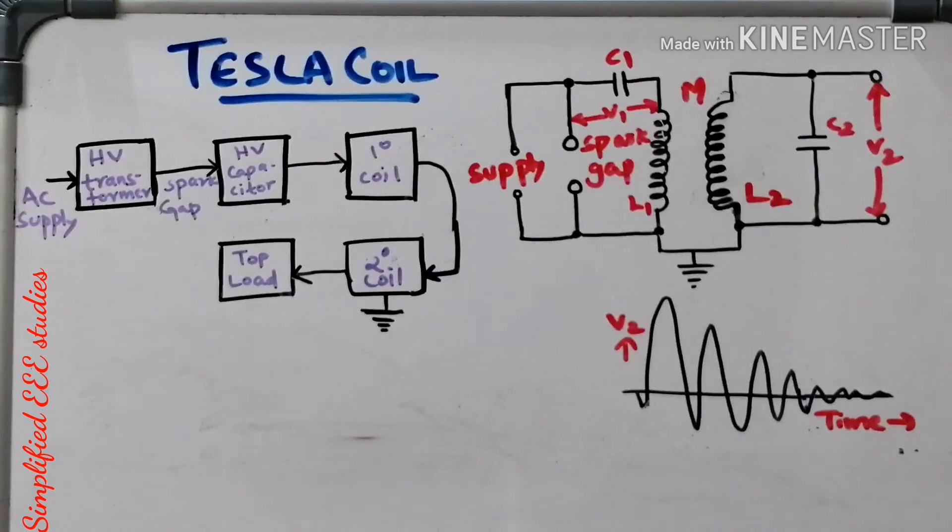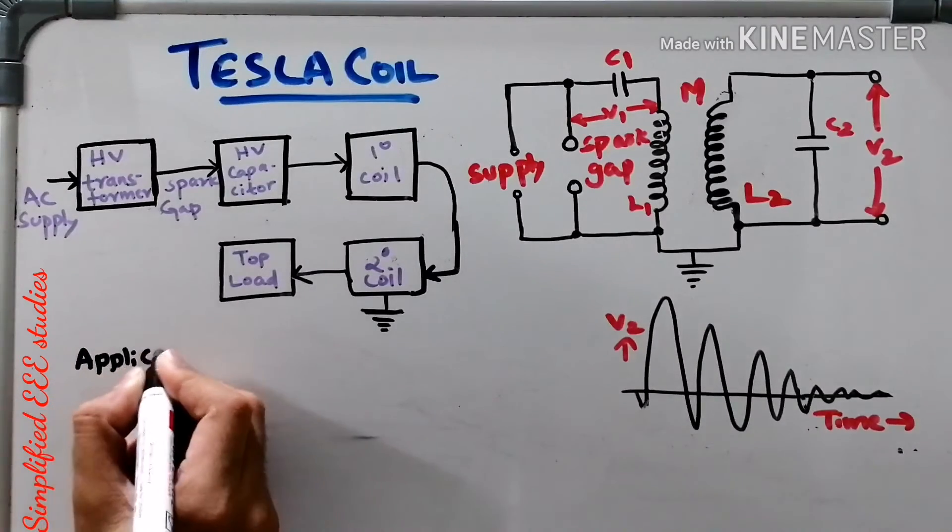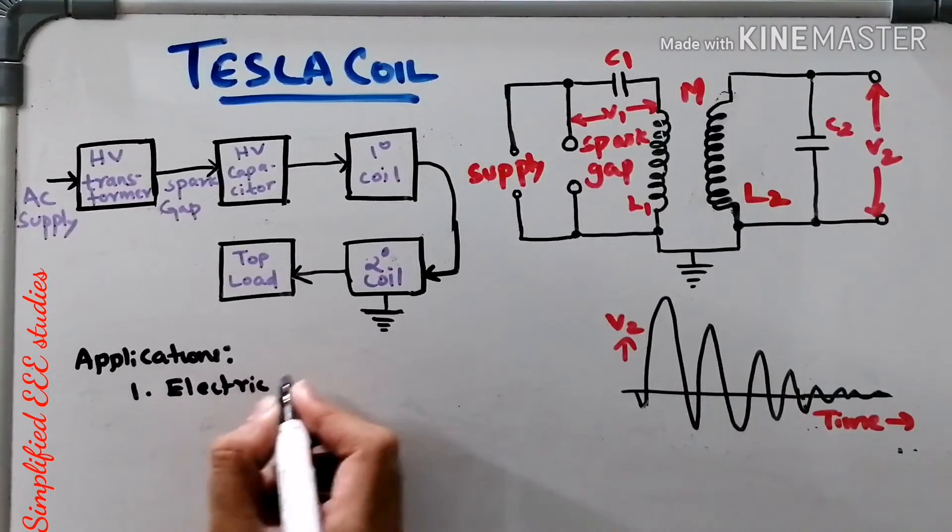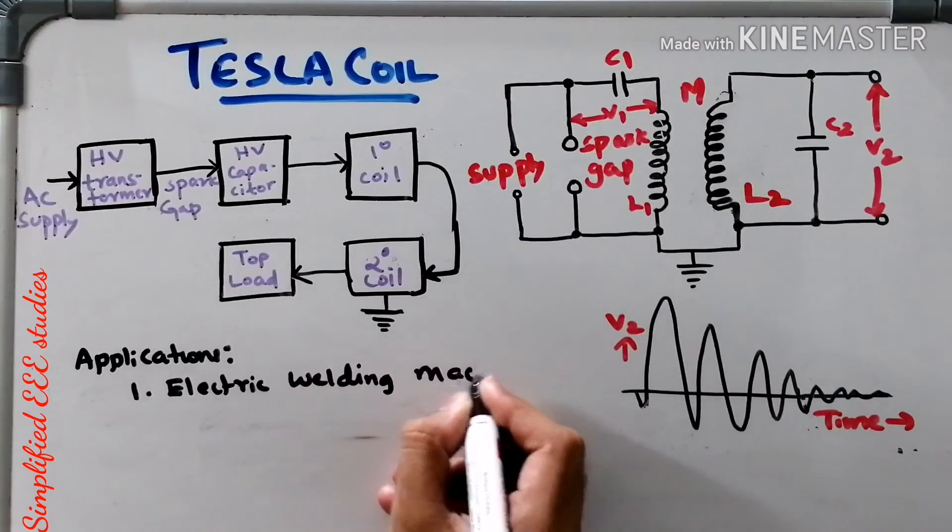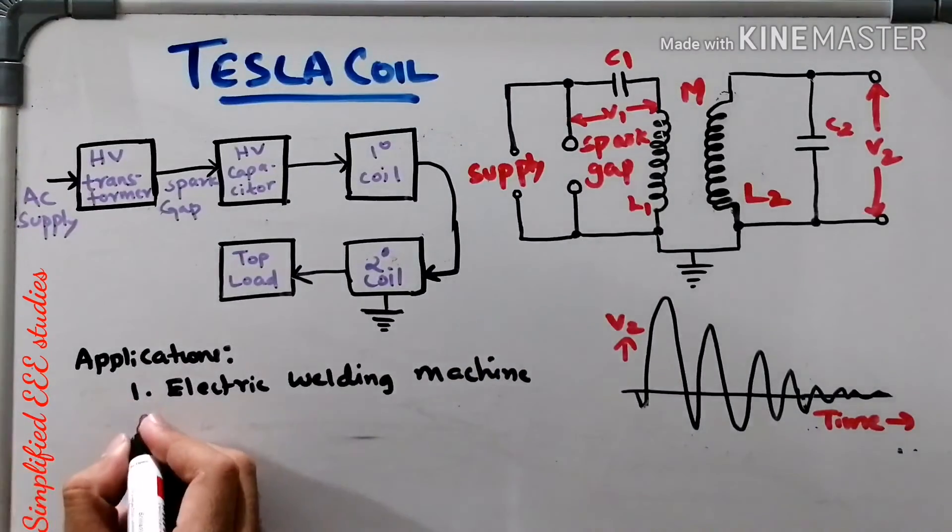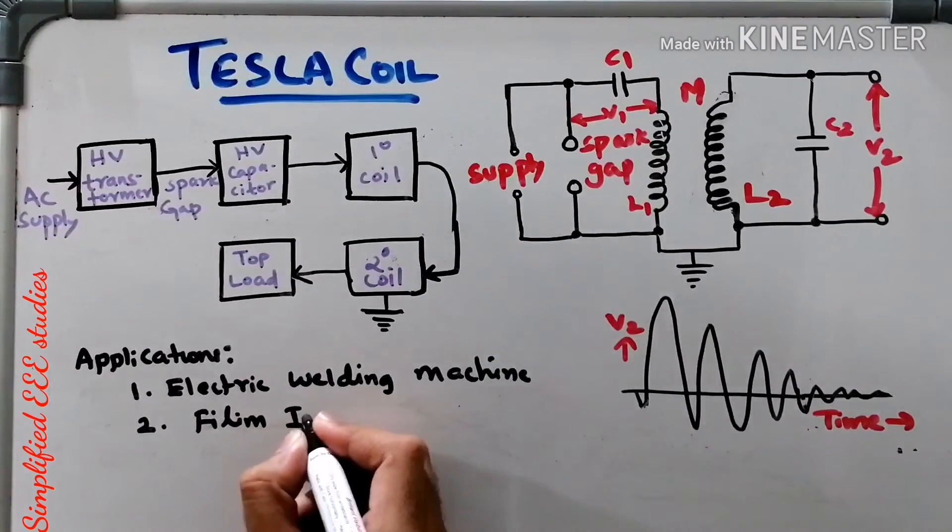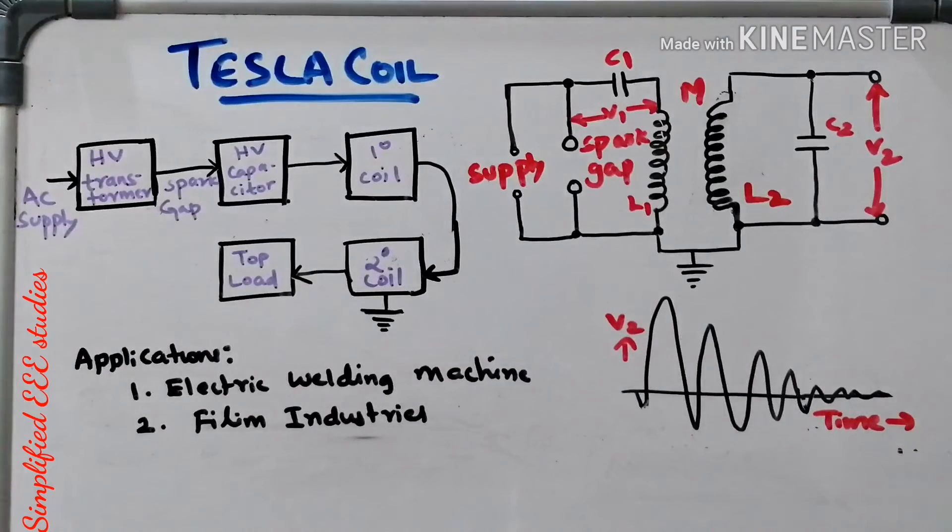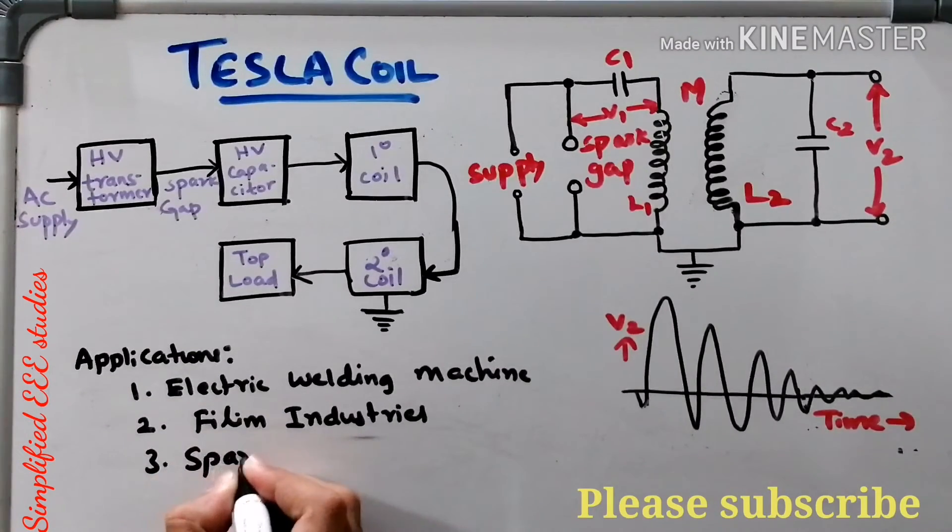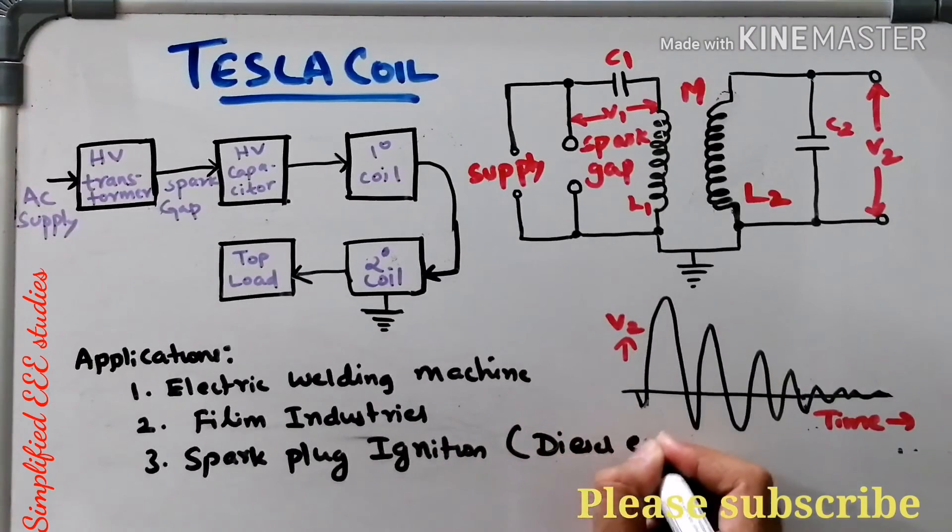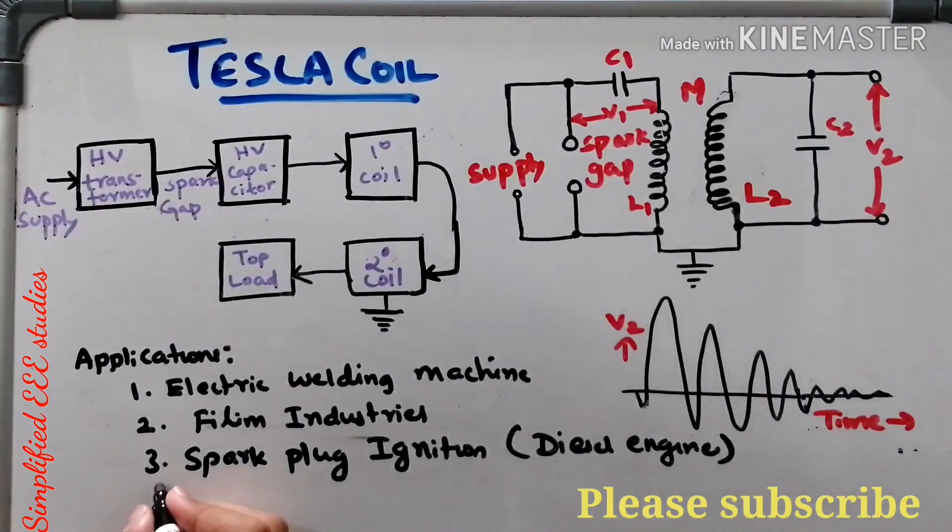Now I will be showing some of the applications of Tesla coil. First application is it is mainly used for electric welding machines. Second application is film industries or entertainment industries. Some magicians, they will be using these Tesla coil. Another application is spark plug ignition, especially in diesel engines. Then you can use Tesla coil in CRT, cathode ray tube.